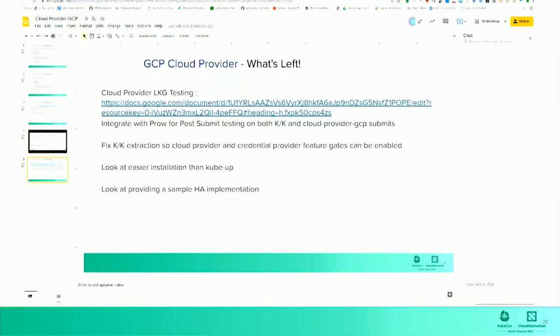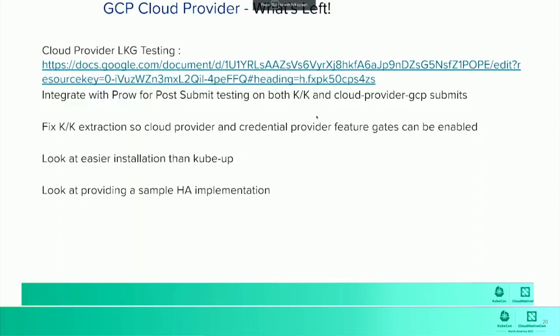Now let's look at what's left to do. LKG testing — please go ahead and pull the slides and take a look at this document. This document explains how we plan on doing development across repos and how we plan to get the testing working. GCP is going to have a prototype and then we're hoping to roll this out to all the other cloud providers. We'd also like to immediately start dealing with the issue of the cloud provider and credential provider feature gates, which are currently blocking the extraction effort.